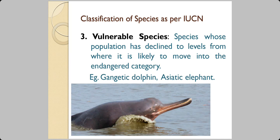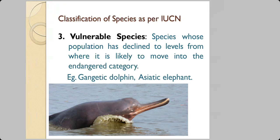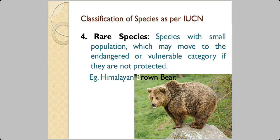Vulnerable species are those whose population has declined to levels from which recovery is unlikely, and they are likely to move into the endangered category. Examples include the blue sheep, Asiatic elephant, and Gangetic dolphin. Rare species are those whose population is very small and may move to the endangered or vulnerable category if not protected — examples include the Himalayan brown bear, Asiatic wild buffalo, desert fox, and hornbill.